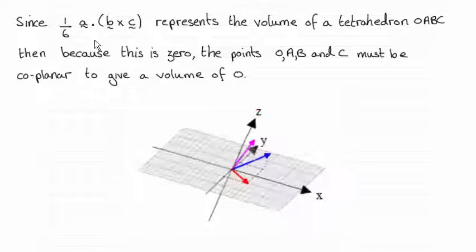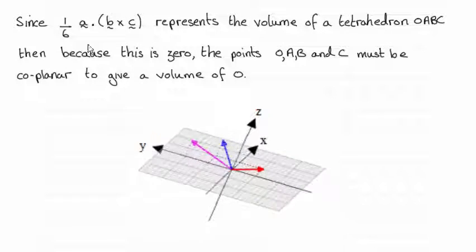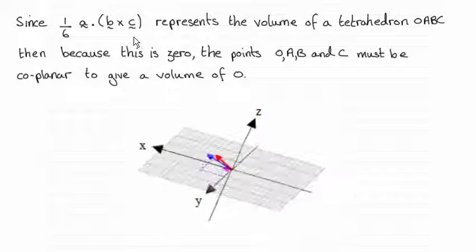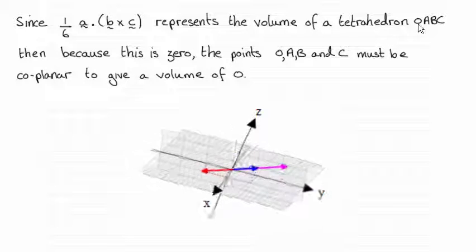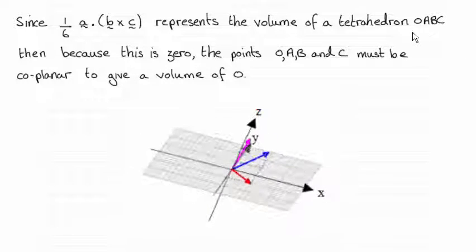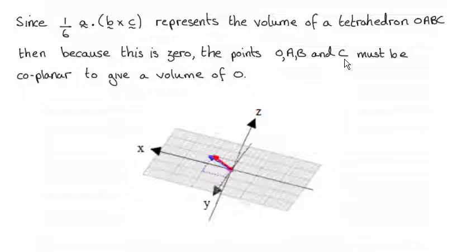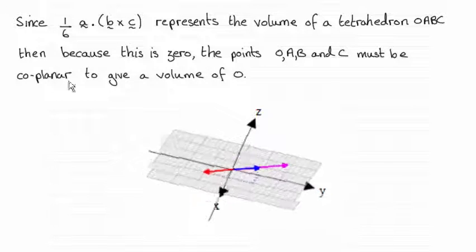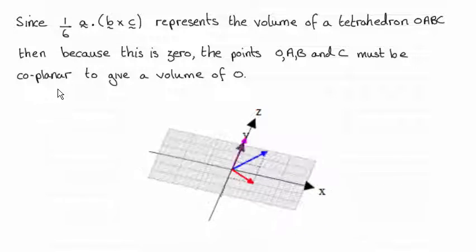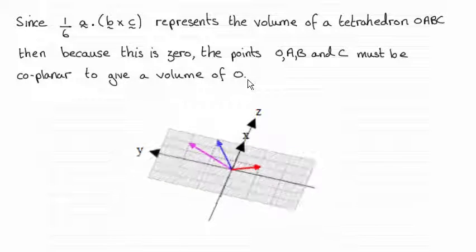Well this particular calculation represents the volume of a tetrahedron OABC where O is the origin. So because it's zero, the points O, A, B and C must be coplanar. In other words, lie in the same plane if they're to give a volume of zero.